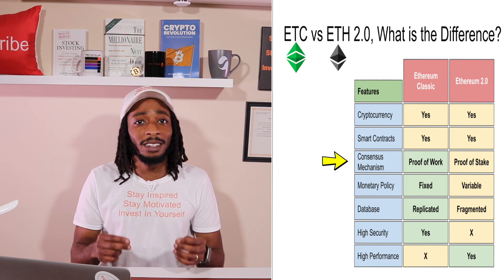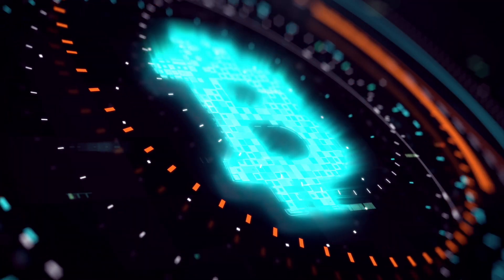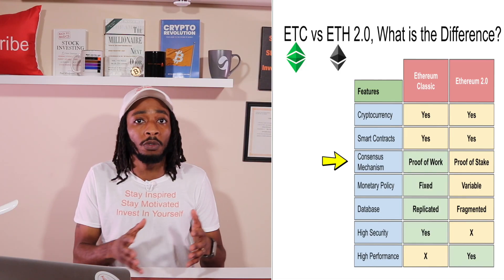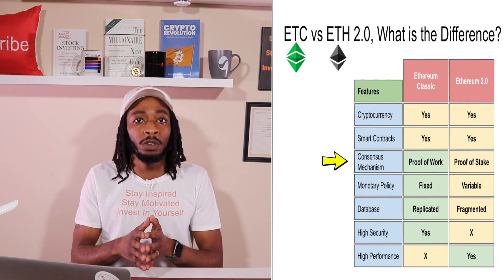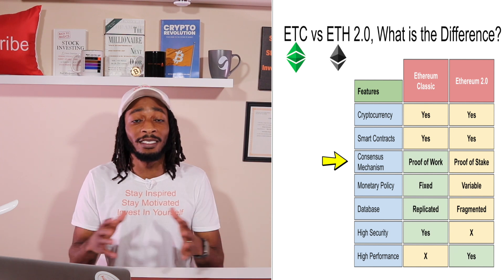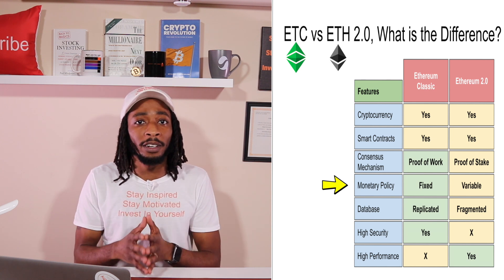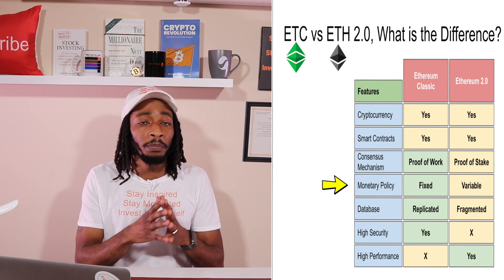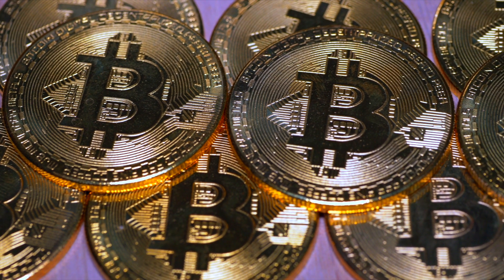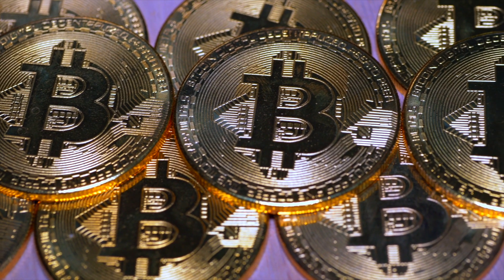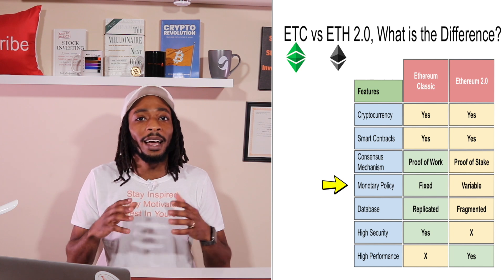Regarding consensus mechanism — essentially what type of blockchain system they're using — Ethereum Classic is staying on layer one, which is proof of work, while Ethereum 2.0 will be moving to layer two, which is proof of stake. As for monetary policy: until 2018 they had the same policy, but in 2018 Ethereum Classic made a change to mimic Bitcoin by instituting a max supply of 210 million ETC coins ever created. Ethereum does not have a max supply, though it can be changed at any time.